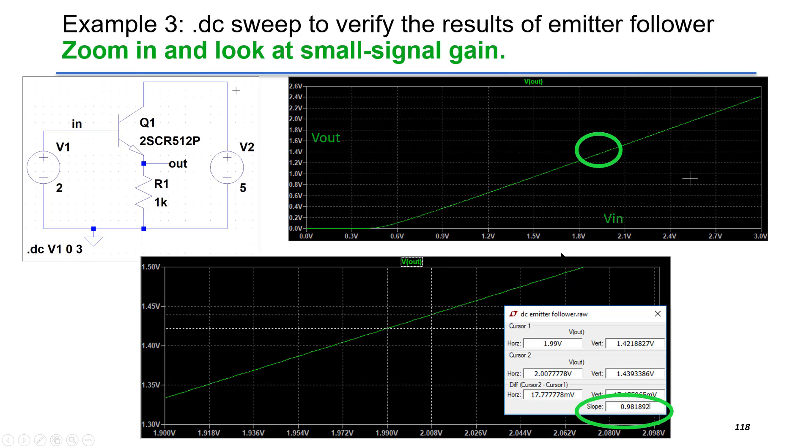When you run the DC sweep over V1 from 0 to 3 volt, the horizontal axis is V in and vertical axis is V out. If we zoom in at 2 volt, we will notice the slope is 0.98, which is exactly the transfer function found by LTSpice.